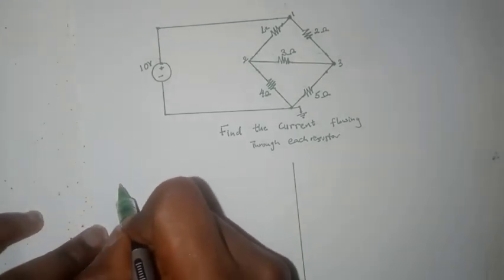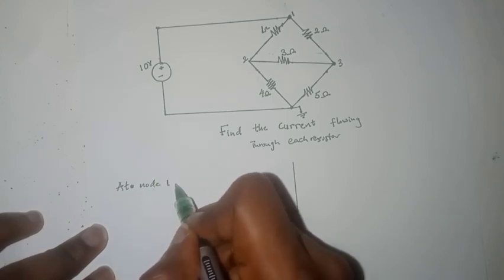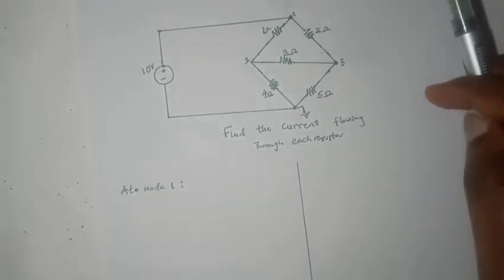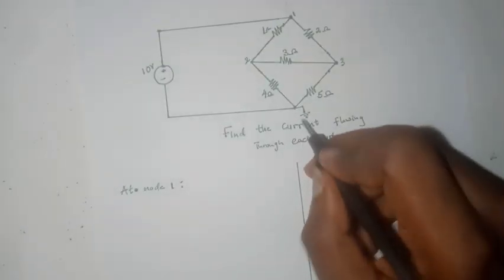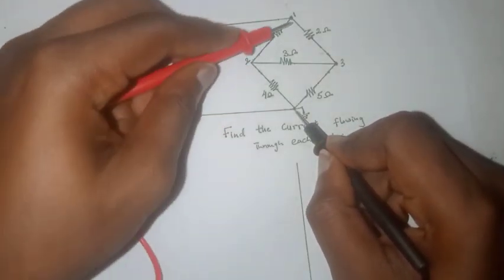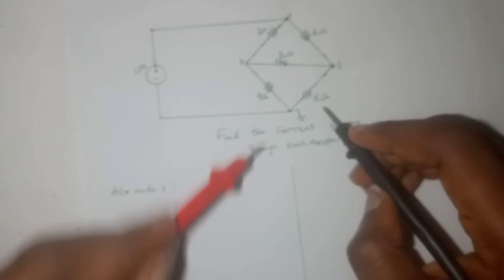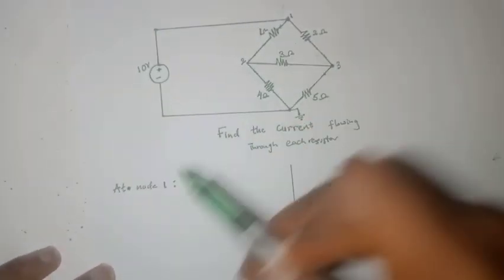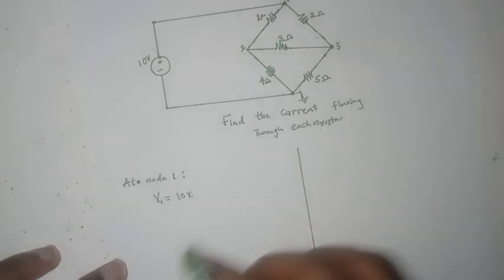At node 1, the first thing you want to notice is that node 1 is quite a special node because it has a voltage source connected across it. In order to determine the node voltage V1, what we do in practice is to connect a voltmeter across it. You put the negative terminal here and a positive terminal here, and what you are going to get as a reading is 10 volts because you have a voltage source connected across it. Using this process, without even writing the KCL equation at node 1, we can conclude that V1 equals 10 volts, which has greatly simplified our problem.